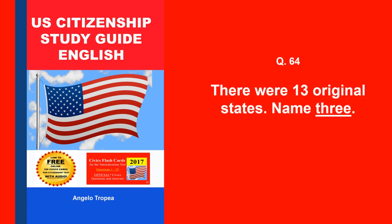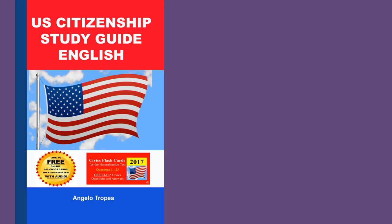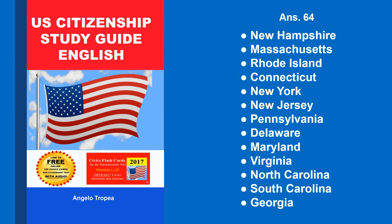There were thirteen original states, name three. New Hampshire, Massachusetts, Rhode Island, Connecticut, New York, New Jersey, Pennsylvania, Delaware, Maryland, Virginia, North Carolina, South Carolina, Georgia.